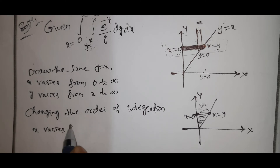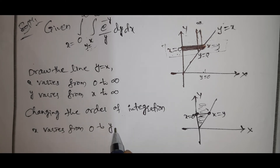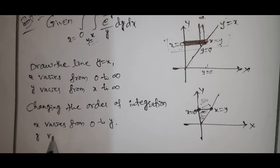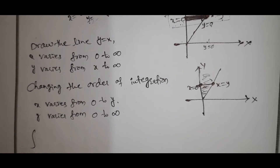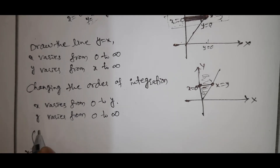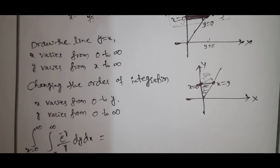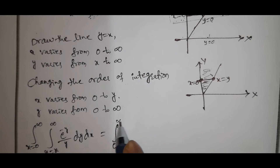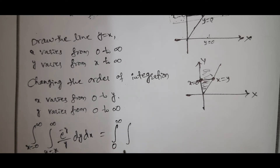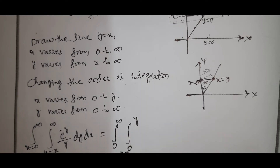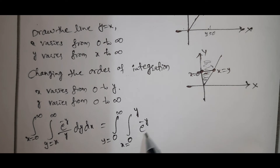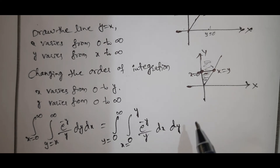After changing the order of integration: x varies from 0 to y, y varies from 0 to infinity. So the integral becomes: integral y from 0 to infinity, integral x from 0 to y, e power minus y by y, dx dy.